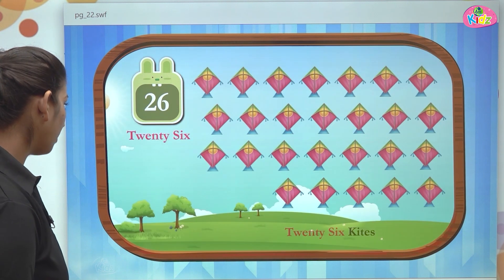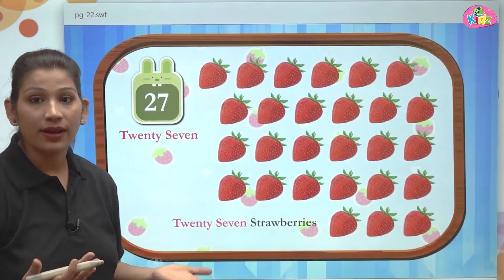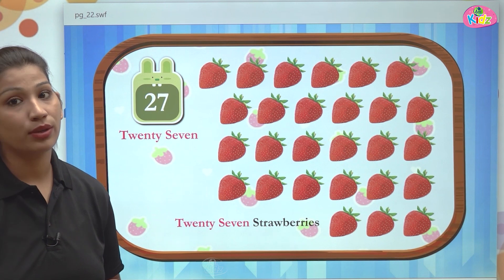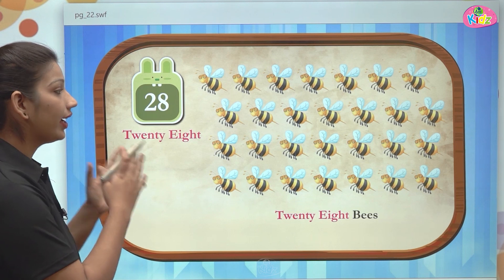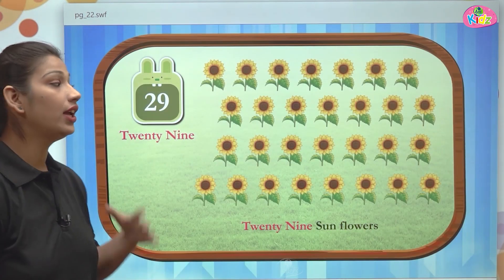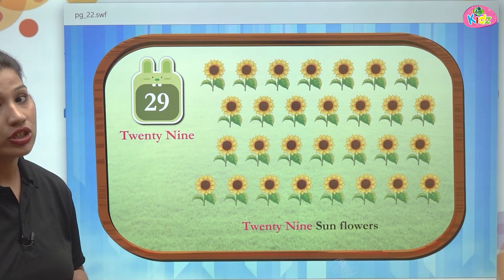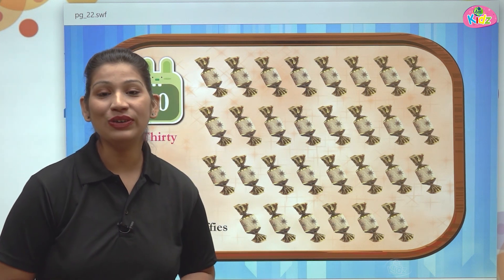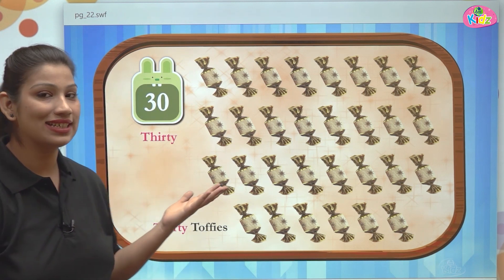Let us again revise all of the numbers. Number 26 — 2, 6 is 26. After 26 comes 27 — 2, 7 is 27. After 27 comes 28, and then 29 — 2 and 9 together make 29. After 29 there comes 30 — 3, 0 is 30. That's it students for today's session of numbers from 26 to 30. I hope you all are aware of all the numbers.